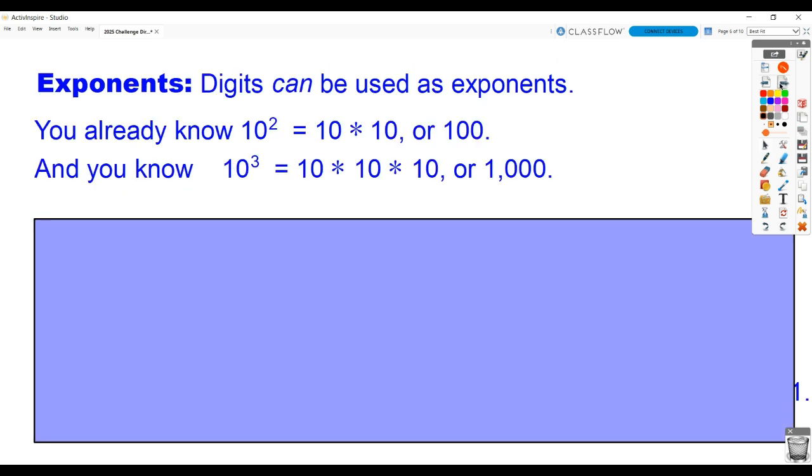One last thing that we might need to learn about is exponents. 6th graders know a lot about exponents. 5th graders are learning, and they're probably new to most 4th graders. Exponents are these tiny little numbers up in the corner that tell you how many times to repeat your number as a factor. What do I mean by that? Well, because I have a little 2 up here in the corner, that means I'm going to take 10, and I'm going to write it as a factor twice. I'm going to write 10 times 10, and we know that's worth 100.